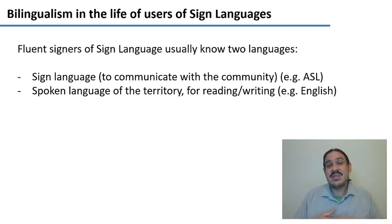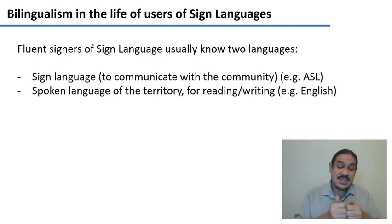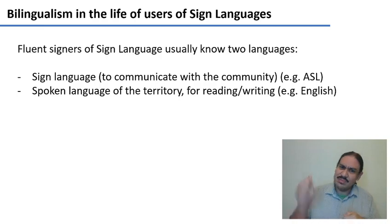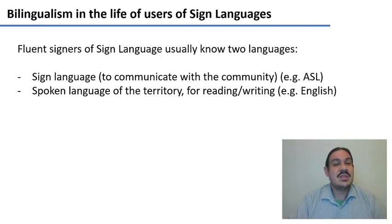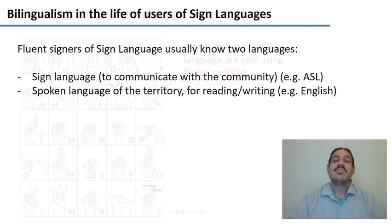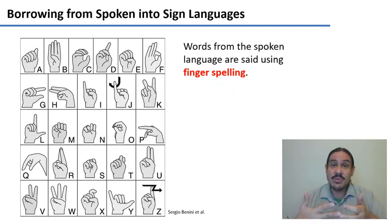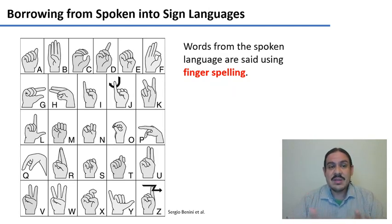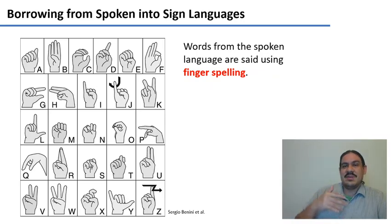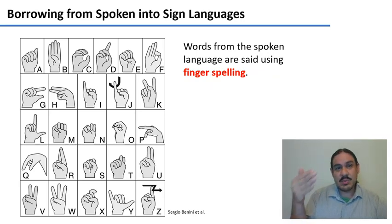There are no writing systems in regular use for sign languages, so text chat is going to have to be in English, or through video — but if it's written, it's probably going to be in English. This leads to several questions about how the contact works between these two languages. The first one is: how are we going to borrow words from a spoken language like English into sign language?